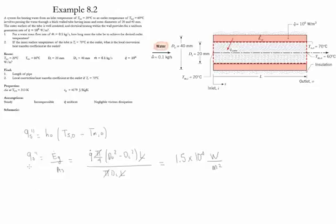If we substitute the value of the flux and the two temperatures into this expression, we could find that the local value of the convection coefficient at the outlet is going to be 1500 watts per meter square kelvin.